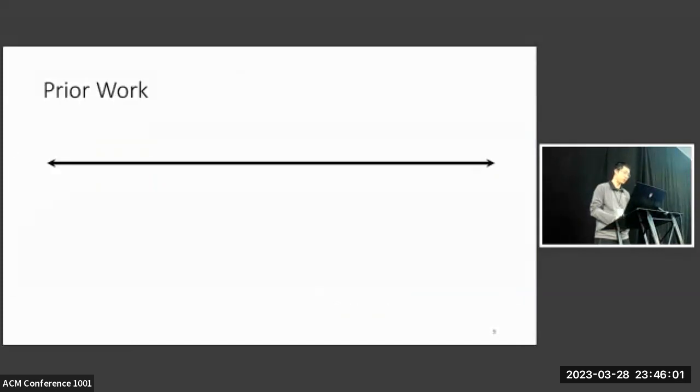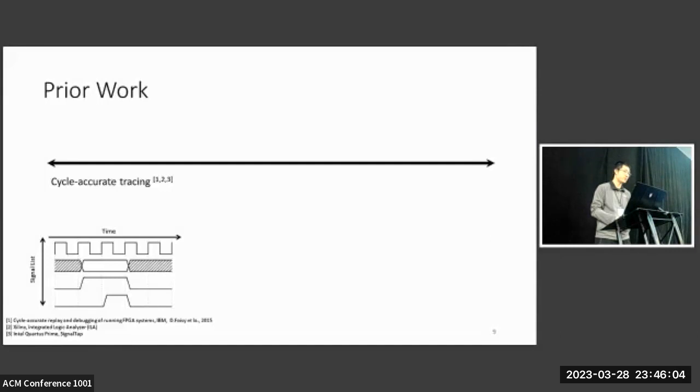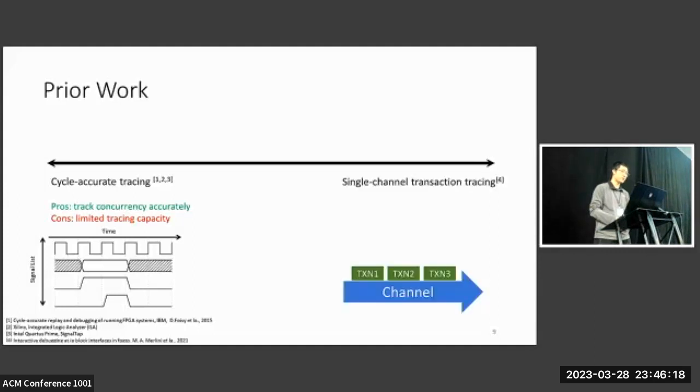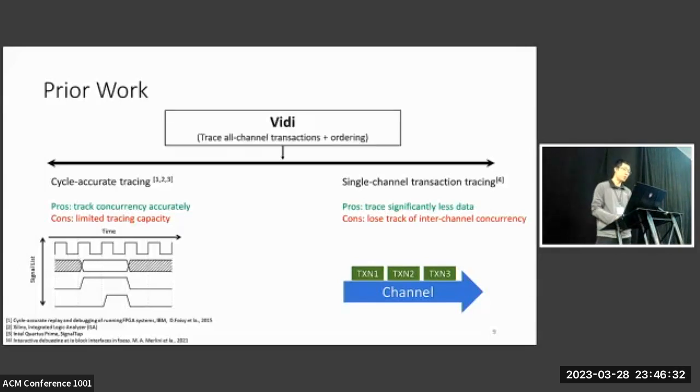In prior work, there are mainly two approaches. On one side of the design spectrum is cycle-accurate tracing. It is fine-grained, traces signal changes at every clock cycle. As a result, it tracks concurrency accurately, but only has limited tracing capacity. On the other side of the design spectrum is single-channel transaction tracing. It abstracts the signal changes in a communication channel as transactions. It traces significantly less data, but will lose track of concurrency when there are multiple channels. In this paper, we want to propose Vidi, which is making a better trade-off in this design space, by tracing cross-channel transactions together with their ordering information.